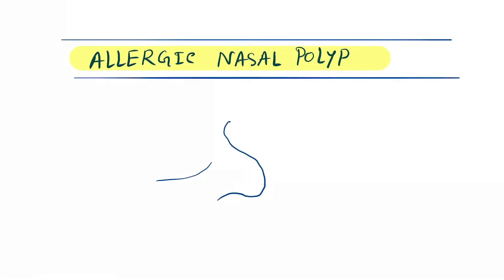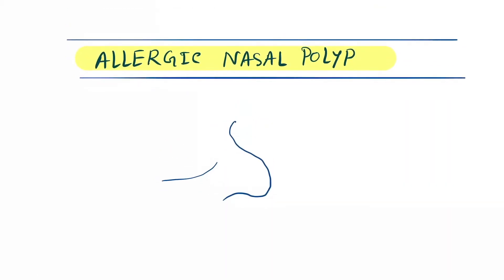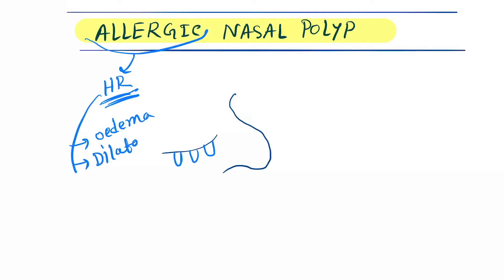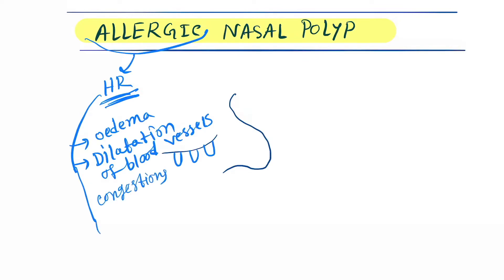Today our topic is allergic nasal polyps. Due to hypersensitivity reactions, benign growths form inside the nasal canal. What happens is edema, dilatation of the blood vessels, congestion, and the presence of inflammatory cells.